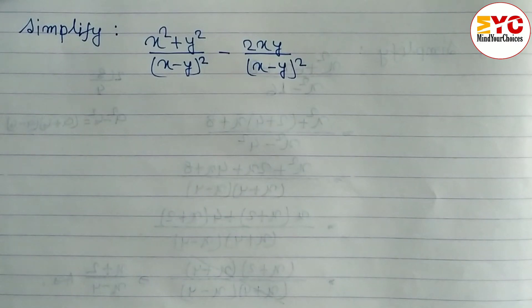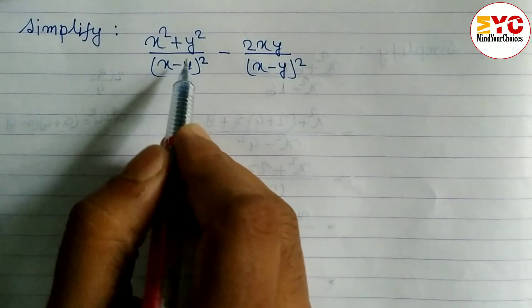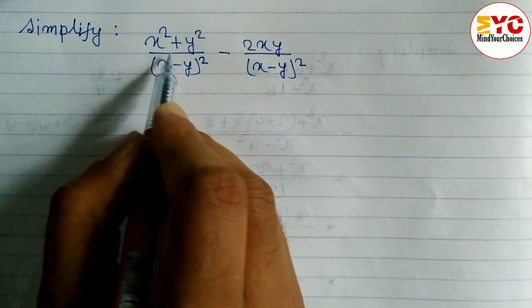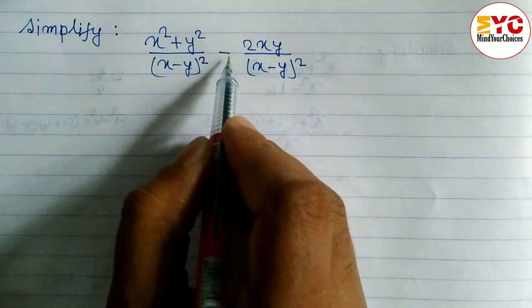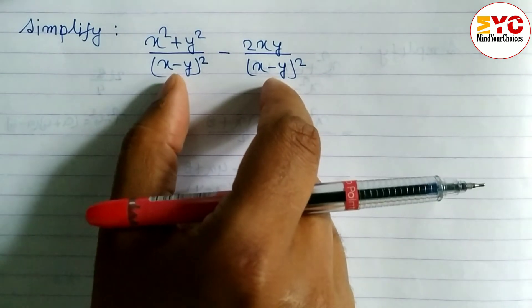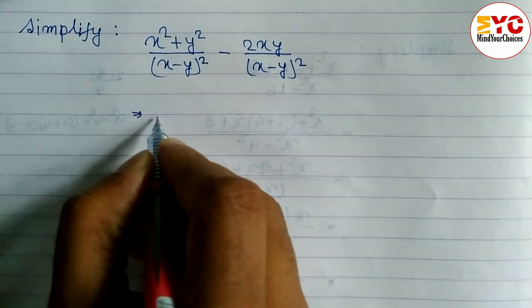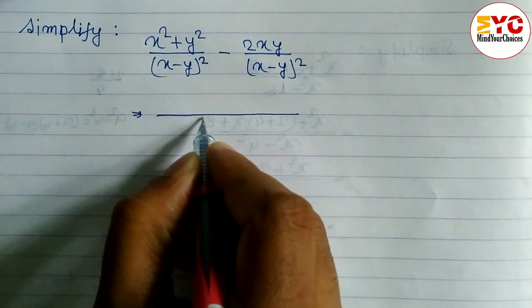In this video we will learn how to simplify. This question is taken from Class 8. You can see here we have a question: x squared plus y squared over x minus y whole squared, and here also x minus y whole squared. So both are same, so it's easy to take LCM.